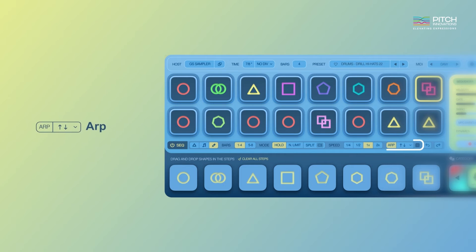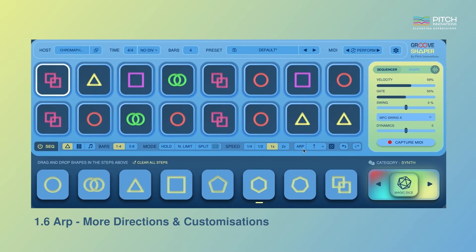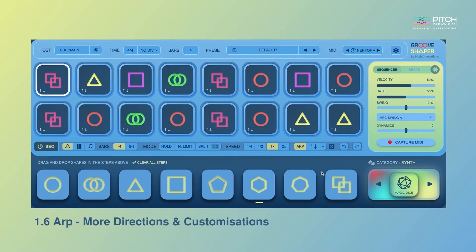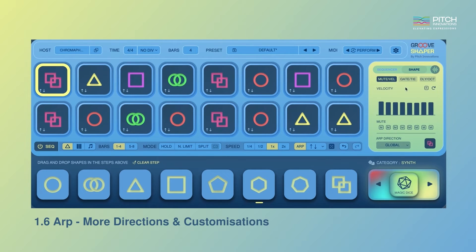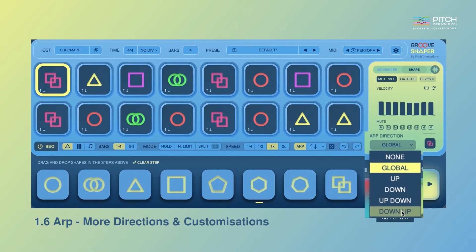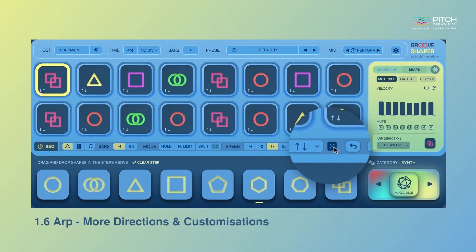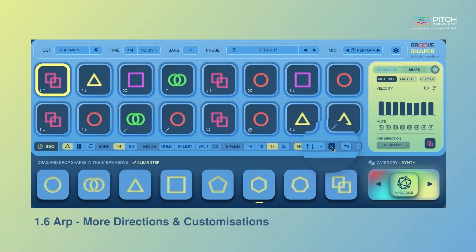The ARP function, which has been a crowd favorite, now features more powerful updates. You can choose from a range of options such as going up, down, and more. You can take this even further by modifying the ARP direction for each shape individually, and use the random button to randomize the ARP direction for individual shapes across the pattern, creating some seriously cool and unique patterns.